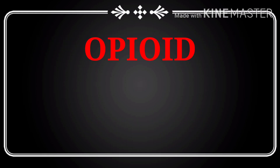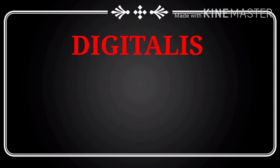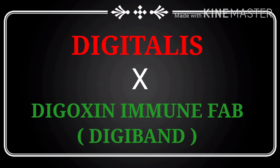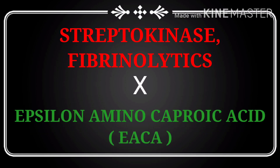Next is Opioid. The antidote of Opioid is Naloxone. Next is Digitalis. The antidote of Digitalis is Digoxin immune fab, that is DG-band. Next is Streptokinase and Fibrinolytics. The antidote is Epsilon Aminocaproic Acid, that is EACA.